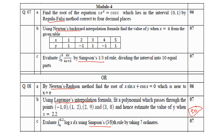My dear students, if you study Regula Falsi, there will be an option for Newton-Raphson method. For Newton's backward or forward interpolation, the option is Lagrange's interpolation formula. If you study Simpson's 1/3 rule, there will be an option with Simpson's 3/8 rule. There will be interchange also — they can swap questions between 7B and 7C, so be prepared for any arrangement.